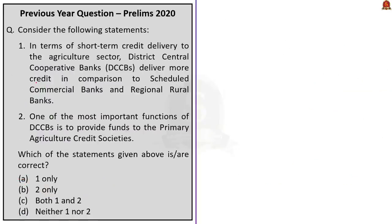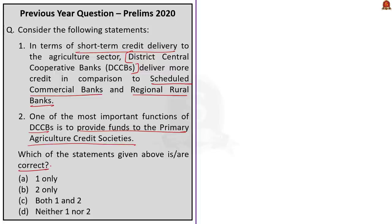Moving to the third question. Consider the following statements. Statement 1: In terms of short-term credit delivery to the agriculture sector, district central cooperative banks deliver more credit in comparison to scheduled commercial banks and regional rural banks. Statement 2: One of the most important functions of district central cooperative banks is to provide funds to the primary agriculture credit societies. Which of the statements is or are correct? Options: A — 1 only; B — 2 only; C — both 1 and 2; D — neither 1 nor 2.